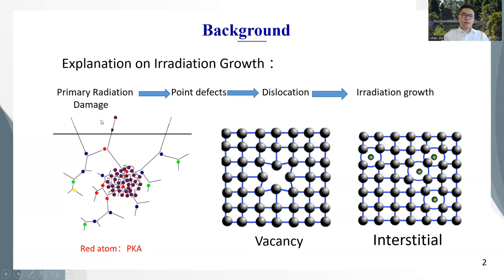My research will focus on the simulation of primary radiation damage in zirconium. The left picture shows the process of primary radiation damage. A neutron knocks with the material atoms, and the atom leaves its lattice position and becomes the primary knocked-on atom, PKA. The PKA knocks with other atoms and generates the cascade. The cascade will generate point defects of vacancies and interstitials.